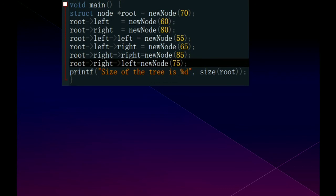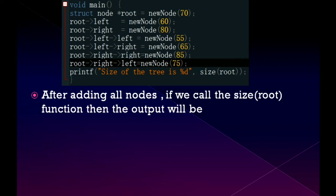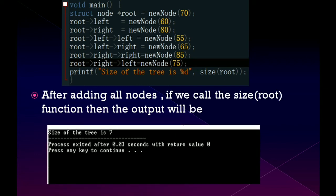And now we should add numbers to the binary nodes. In main function I am going to write like this and after adding all nodes if you call the size of root function then the output will be 7.